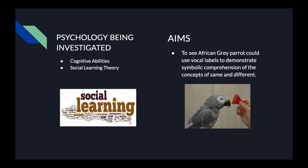Because some of the colors and some of the shapes and some of the materials were already in his label repertoire. He was already able to identify some labels, which we will talk about later. So we just want to see if he can use those vocal labels that he has learned throughout his life as he was a lab animal to demonstrate symbolic comprehension of the concepts of same and different. That's our main aim of the study.